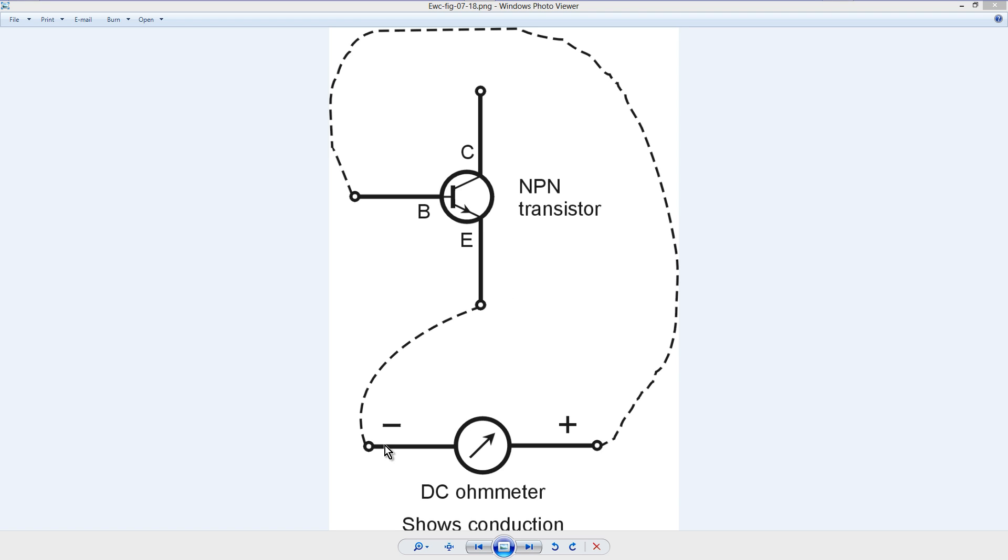Here's the first way: the negative lead to the emitter, the positive lead to the base. You should see conduction, that is to say a few ohms, it doesn't matter how many.